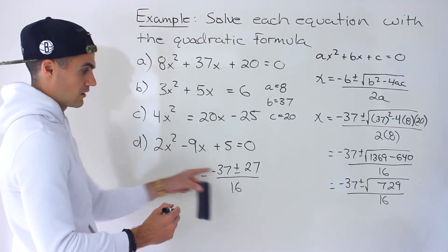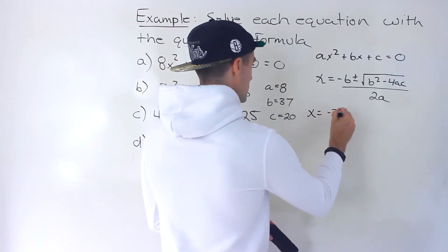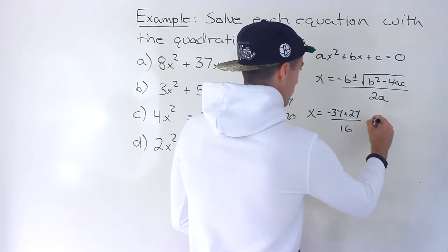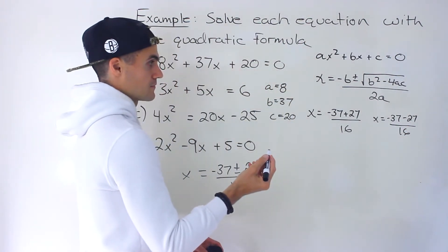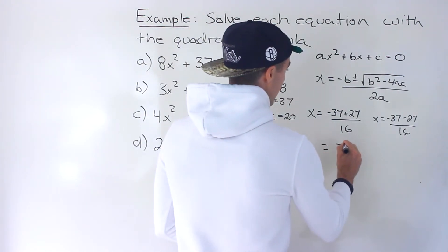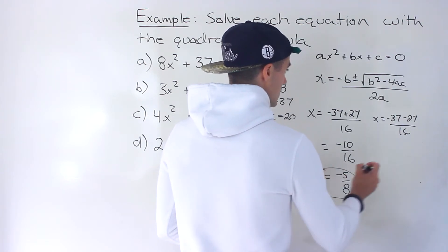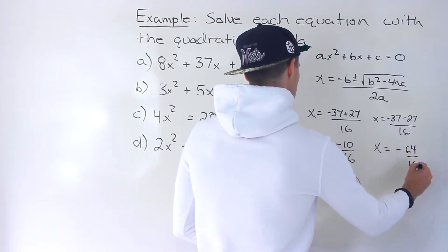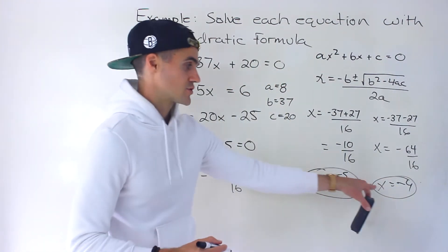So we end up with two different solutions. Either x equals negative 37 plus 27 over 16, or x equals negative 37 minus 27 over 16. Negative 37 plus 27 gives us negative 10 over 16, which simplifies to negative 5 over 8. That is one of the solutions. The other would be negative 64 over 16, which gives us negative 4. So in this particular case, the two solutions are actually smooth values.